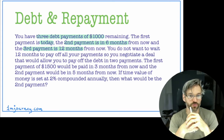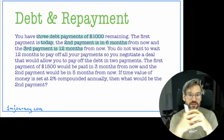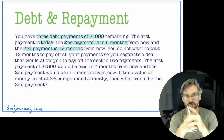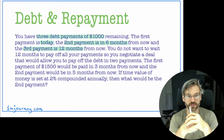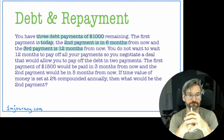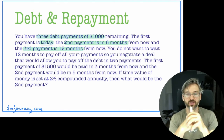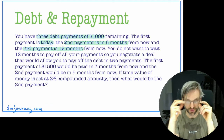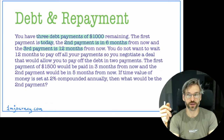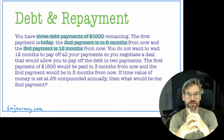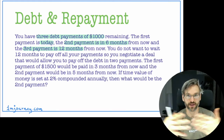You want to pay it off sooner, so you negotiate a deal to pay it off in two payments instead. The first payment is $1,500 and that is in three months from now. The second payment is five months from now. Now if the time value of money is set at 2% compounded annually, then what would be the second payment? This is a great example of equivalent values because the debt and repayments have to be equivalent.